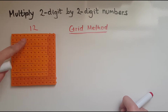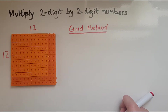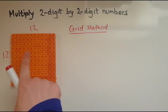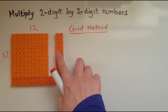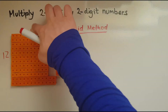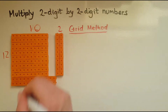There are 12 rows of 12 cubes each, or 12 columns of 12 cubes each. To demonstrate the grid method, I can break this down: that 12 is made of 10 and 2. So there is 10 and there is 2.